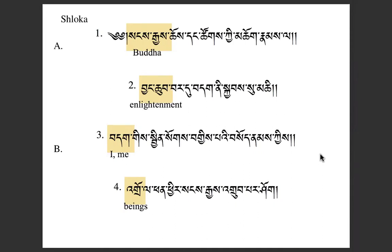Welcome back to Introduction to Reading Tibetan. We're learning how to read a Tibetan text using the Refuge and Bodhicitta Prayer. We talked about the four-line shloka structure of the text and last time we looked at line one. Now we move to line two, which is the completion of part A in the two-part structure A and B. Again, first we will spell, then we'll read, then we'll analyze.